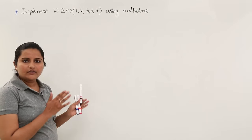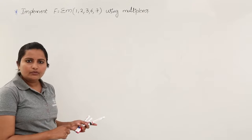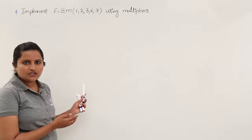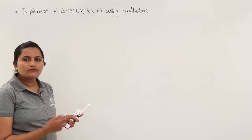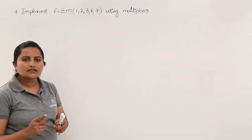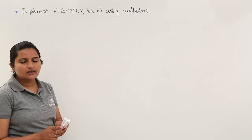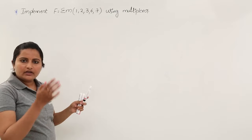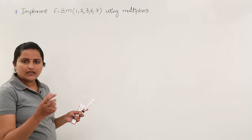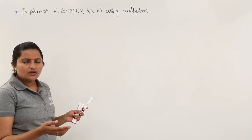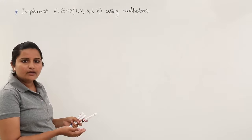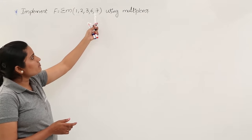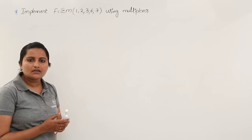To get the truth table, we definitely require some inputs and an output. The output is obviously our functionality. How many inputs we need to take is important — the inputs are dependent upon the functionality given. To get an idea about input variables, we look at the max min term value, which here is 7.